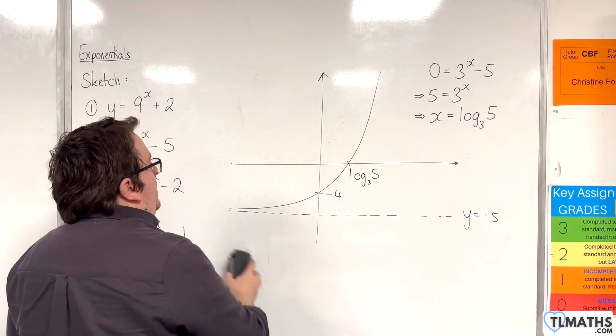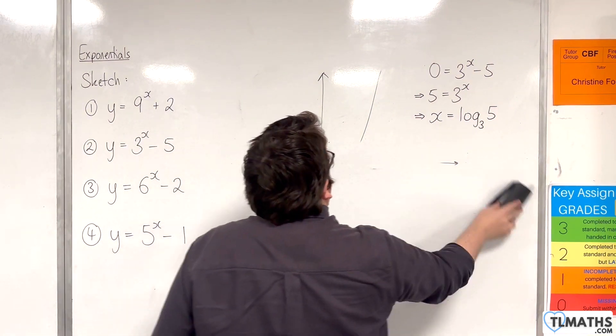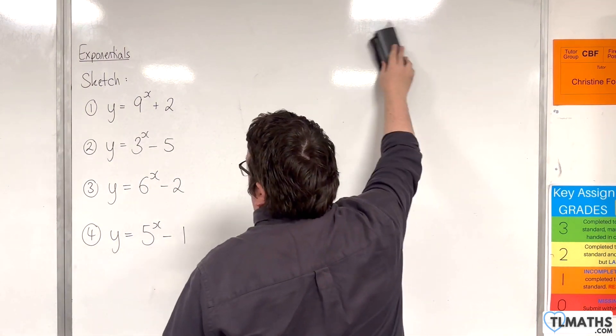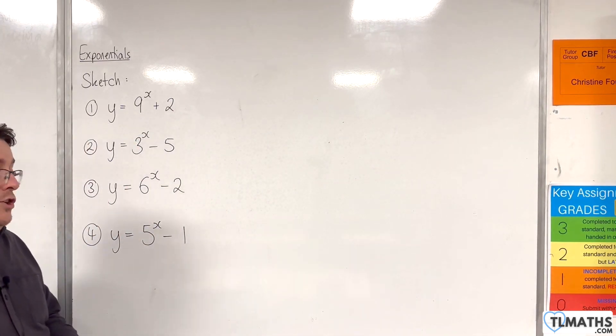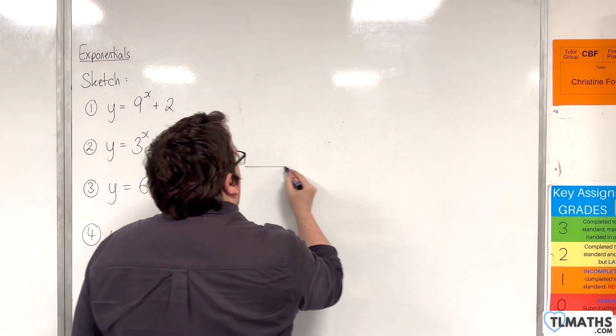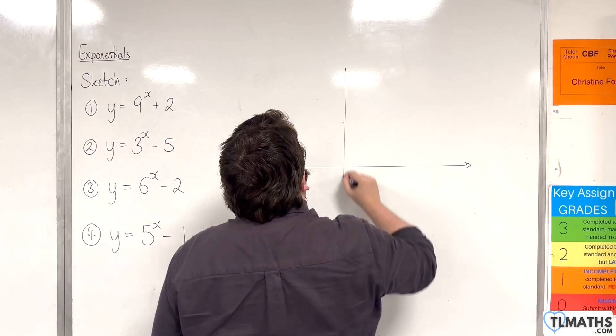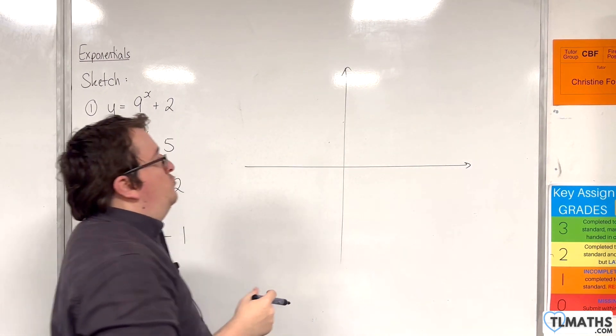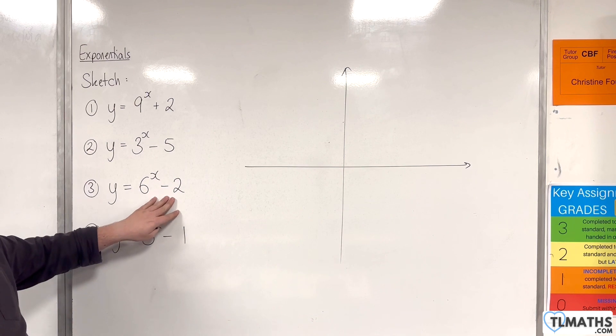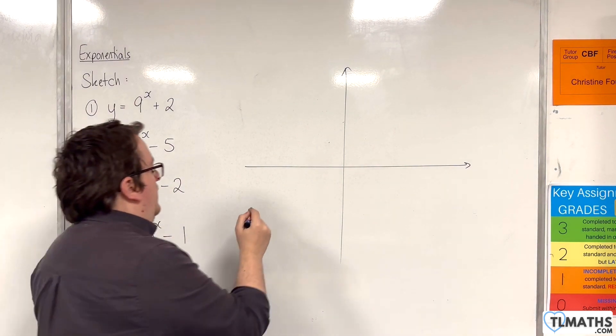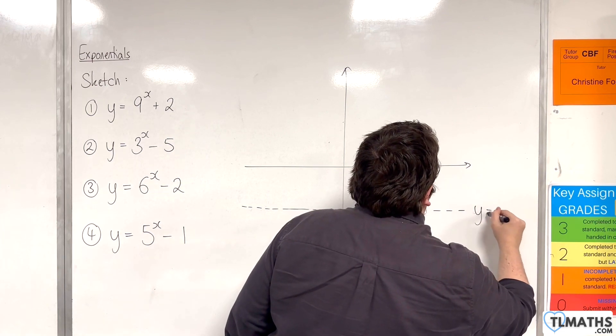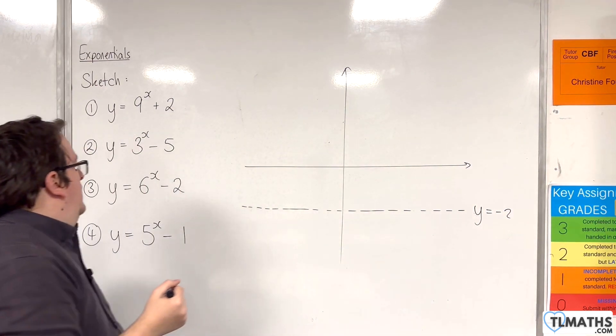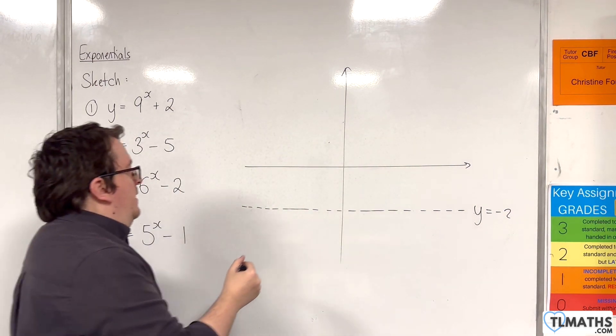Right, let's take a look at another example. So number 3, y equals 6 to the x take away 2. So first things first, we draw on the horizontal asymptote which will be at y equals minus 2. So y equals minus 2.